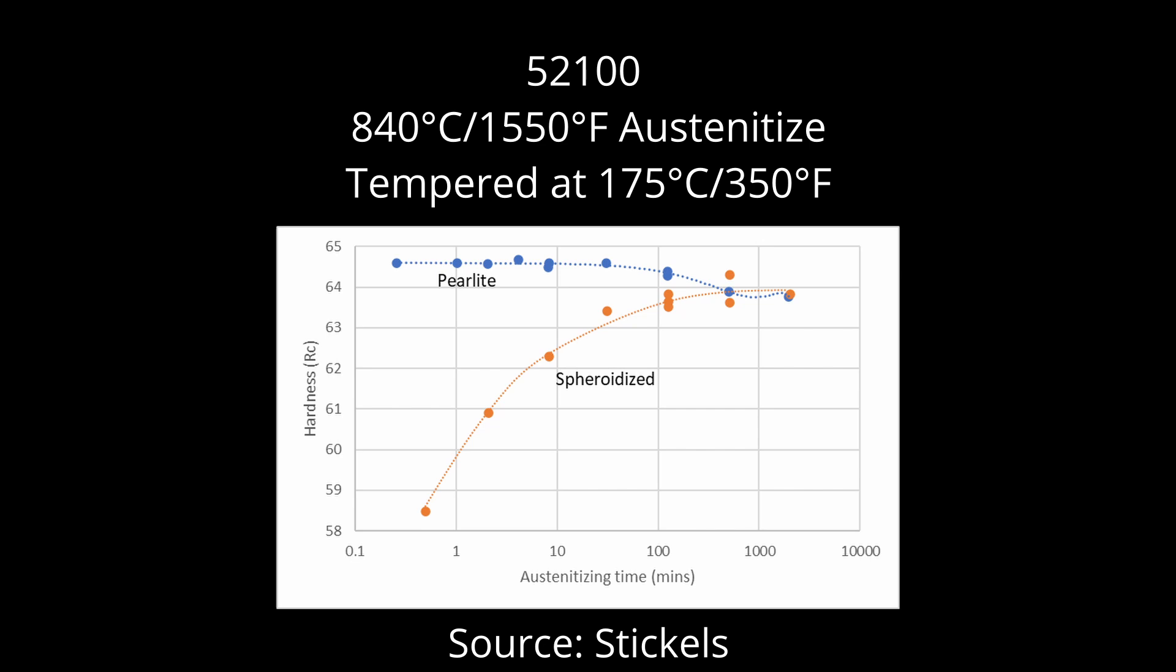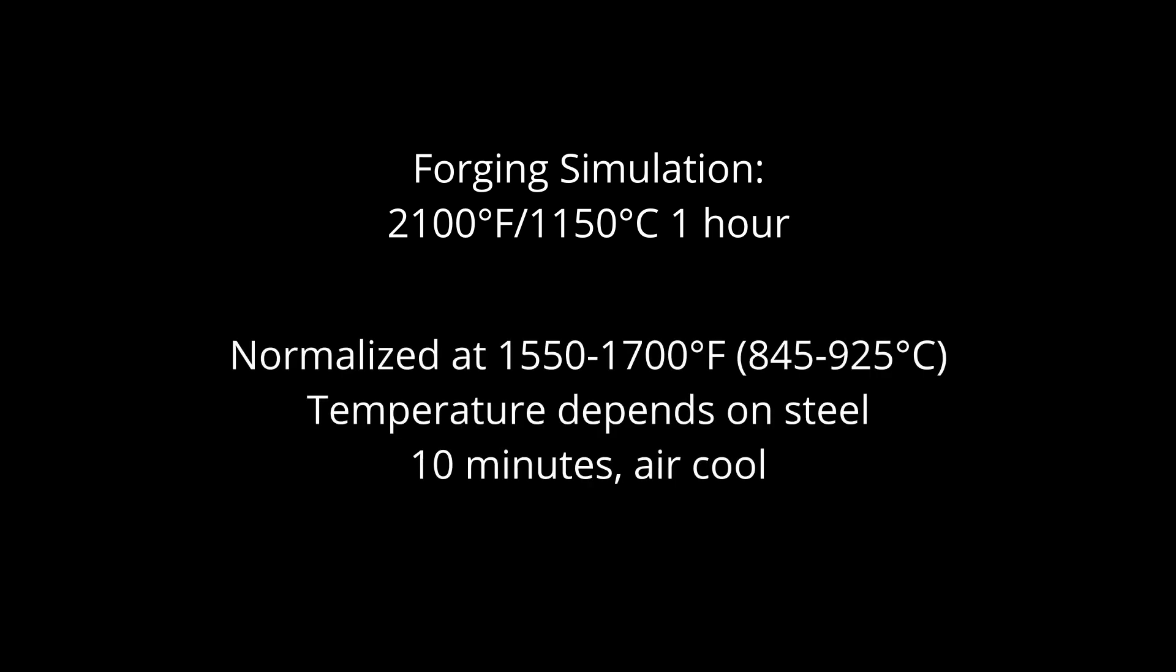So for this attempt at forge heat treating, I overheated each steel at 2100 degrees Fahrenheit for an hour to simulate forging. I normalized for 10 minutes and air cooled. No other cycling or annealing as that will slow the steel's response to austenitizing.